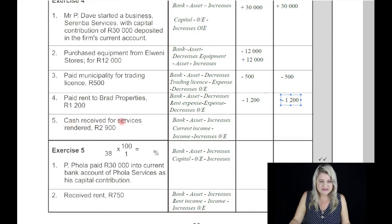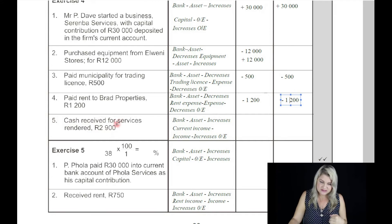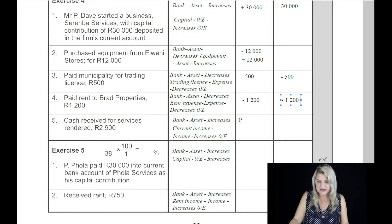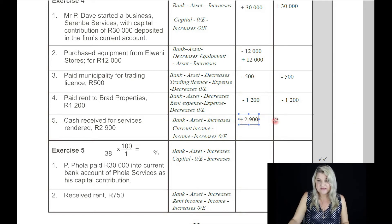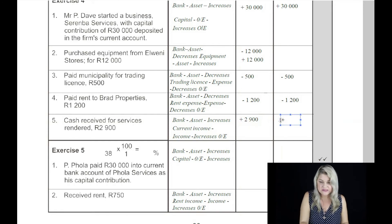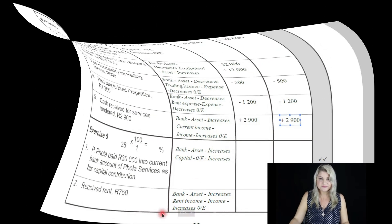On the fifth transaction: cash receipt for services rendered. Services rendered is an income. Where are we going to put the money? In the bank. The bank is an asset, so we're going to increase bank by 2,900 Rand. And what does an income do to owner's equity? It increases owner's equity — 2,900 Rand.